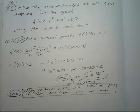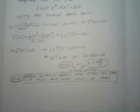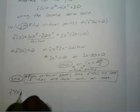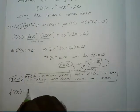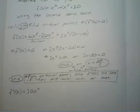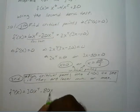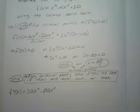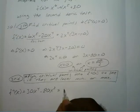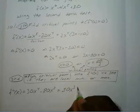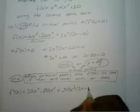Now we have to find our second derivative. Bring down our 5: 30x to the 4th power, minus 80x to the 3rd. Factor if you can — it makes it go a bit easier. We can factor out 10x to the 3rd power times 3x minus 8.